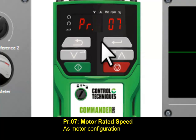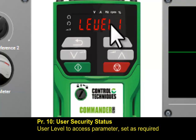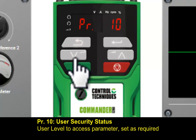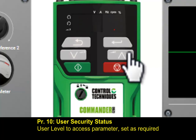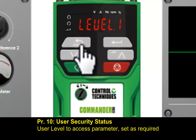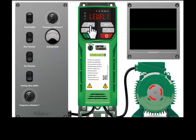Parameter 10 is the user security status. If you change the access level, you can access more parameters as needed. When you have set all parameters, you can check them all.